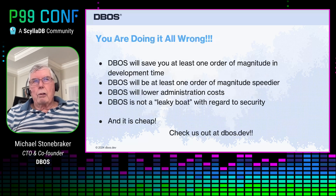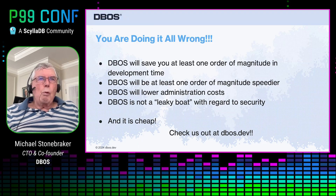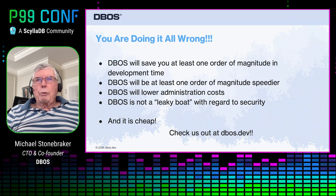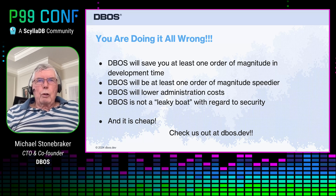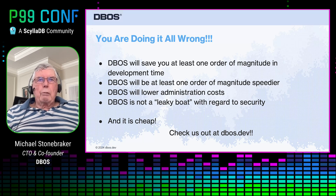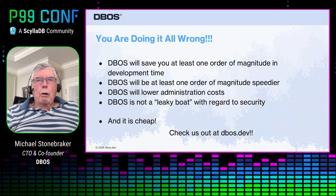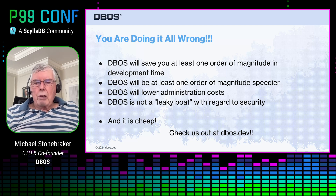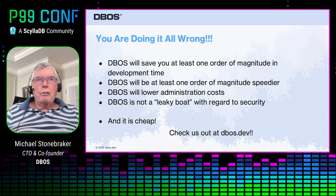So I'm here to tell you that you're doing it all wrong. Take a look at DBOS, which I'll talk about more in a bit. DBOS will save you at least one order of magnitude in development time. It will be at least one order of magnitude faster than AWS Lambda. It will lower your administration costs, and it will have better security than whatever you're doing. And by the way, it's cheap. So go check us out at DBOS.dev. The rest of this talk will explain to you why I can make these claims.